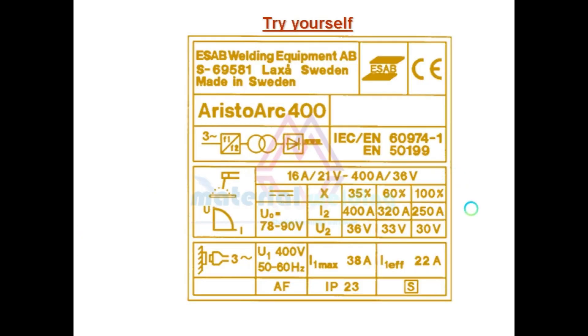There is another example given. Please try to understand for your learning and understanding. I hope you are now able to understand the basics of reading a rating plate and able to explain. You can find detailed definition and meaning of symbols in EN 60974-1 standard.